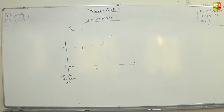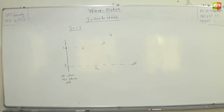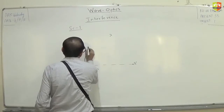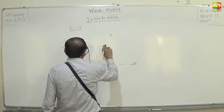Let me give you a hint. If a wave travels a distance of one wavelength lambda, what is the phase difference between initial and final? Let me draw it as a wave. This is point 1 and this is point 2.